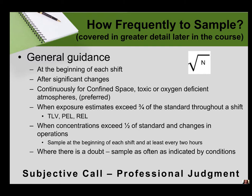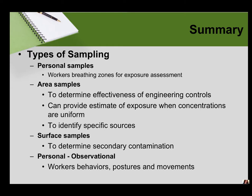How frequently do we sample? General guidance includes sampling at the beginning of each shift, throughout the shift, after significant changes in a work process, after the addition or subtraction of a new agent, continuously for confined spaces with toxic or oxygen-deficient atmospheres, when exposure estimates exceed three-quarters of a standard throughout a shift, or when concentrations are greater than an action level or half the limit. There is some subjective bias in there, and we'll explore this topic further as we move on.